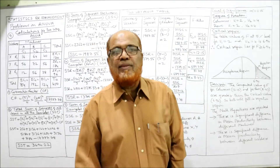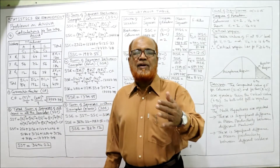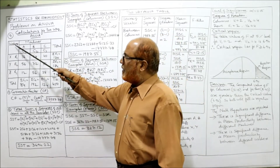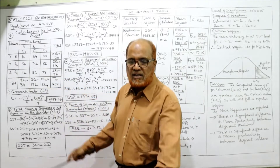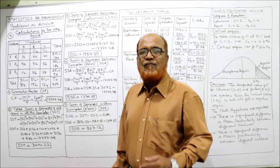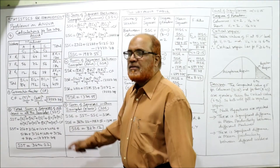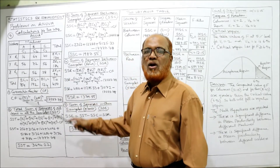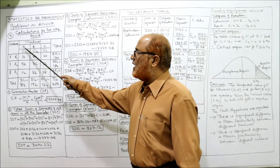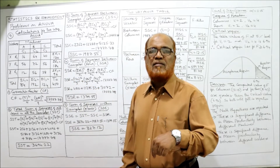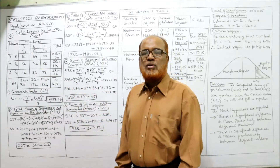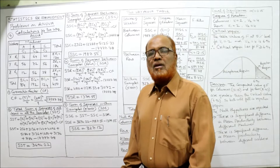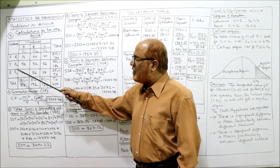This problem is entirely different compared to the one-way ANOVA. In the calculations for two-way ANOVA, the rows represent workers X, Y, Z — labeled R1, R2, R3 for convenience. The columns represent machines A, B, C — labeled C1, C2, C3. So we have three rows and three columns.